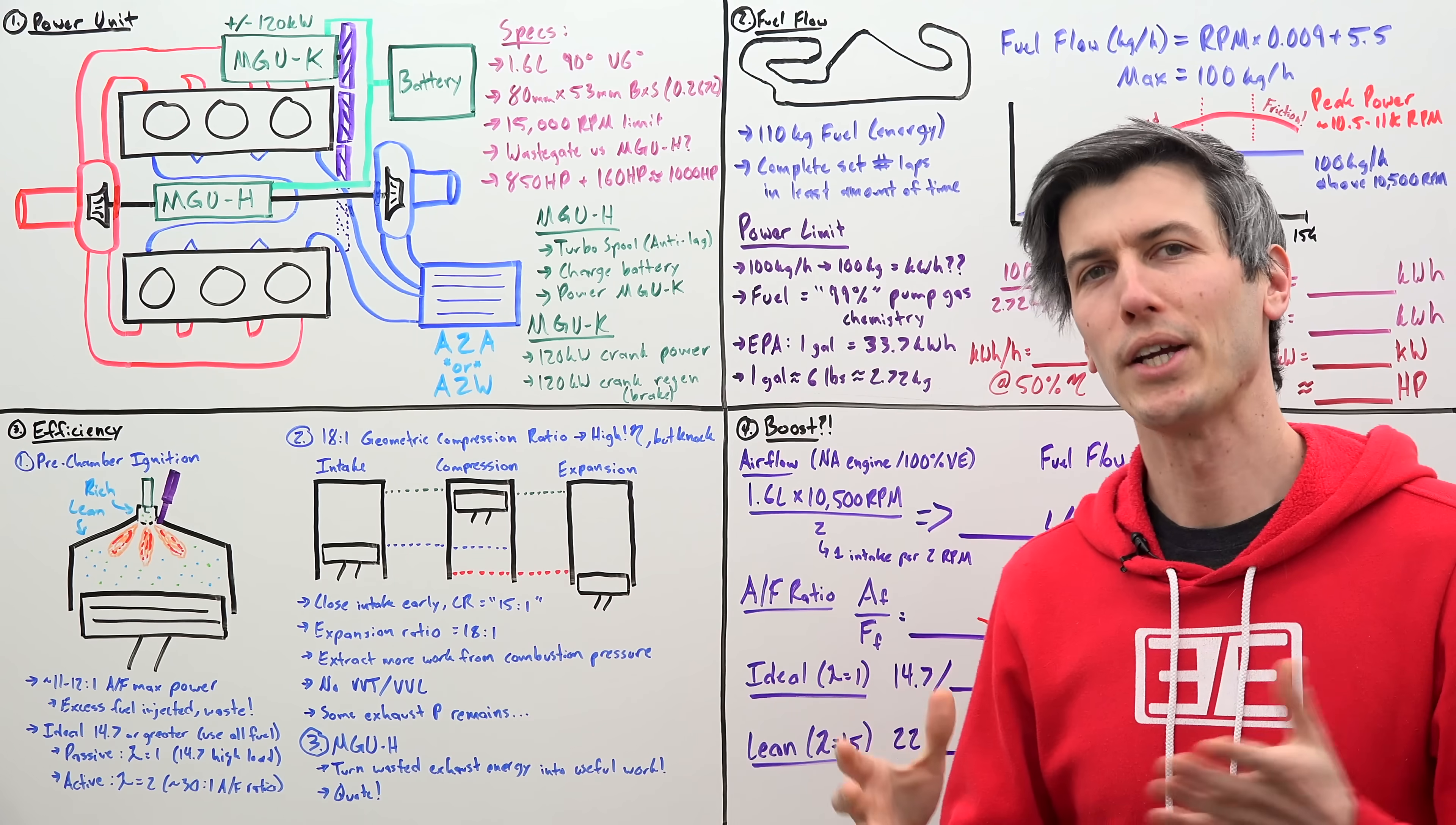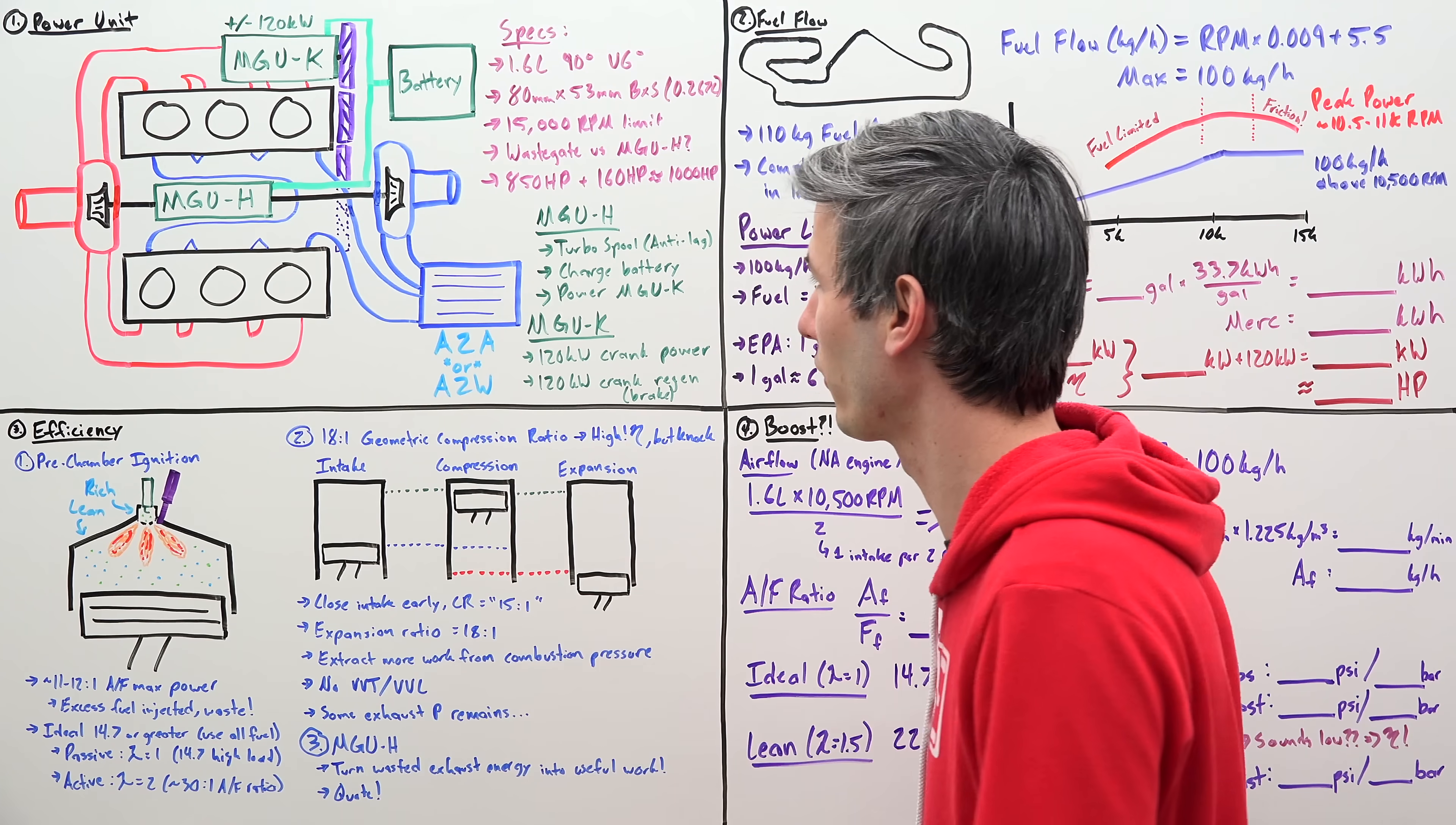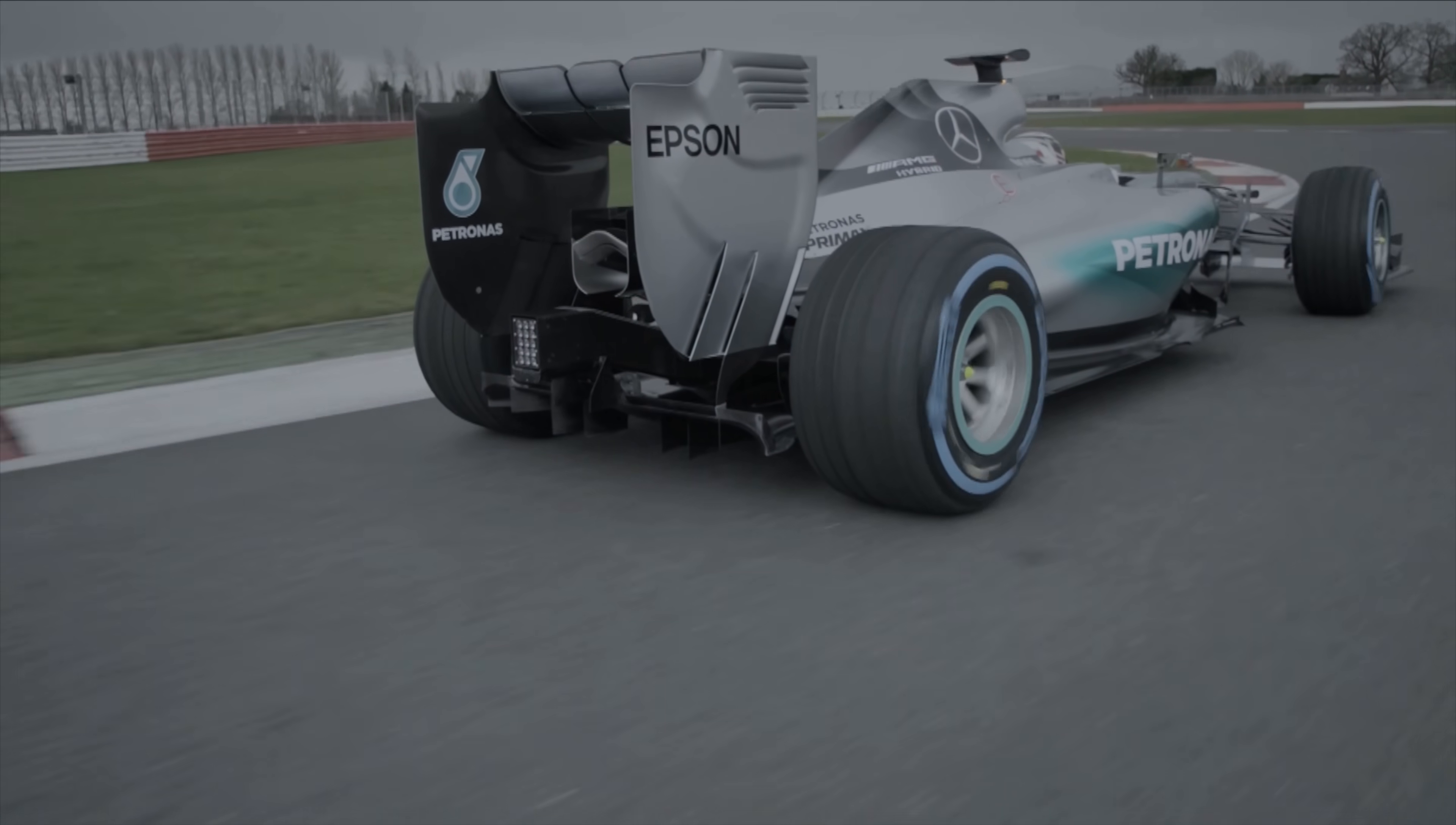Now the current generation of Formula One engines started in 2014. As a general overview, you have air come in through the intake, pass through the compressor side of the turbocharger. Of course that heats up that air so it then passes through an intercooler - this can be air-to-air or air-to-water. That cooled air then passes into the cylinders where it's used for combustion. The exhaust of course exits, helps spool up your turbocharger, and then goes out the exhaust at the back of the vehicle.